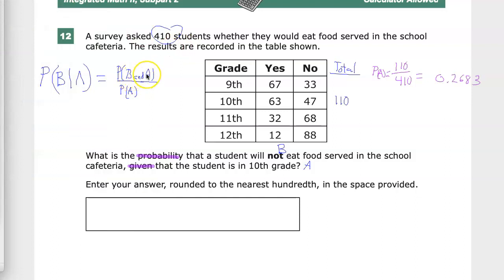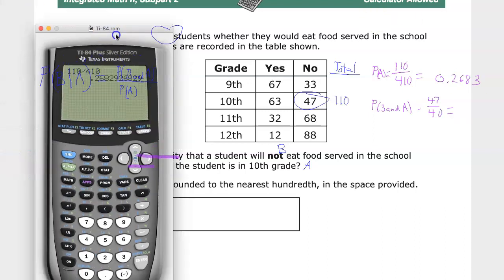Now I need to find what the probability of B and A is, which is to say they're 10th graders and they don't eat food. So 10th grade, no, right there. That's kind of how that works. So I take the 47, and this is probability of B and A. And there's notation for this, but I don't feel like putting it in now. I'll just use 'and'. 47 divided by 410, because it's out of the total number of students, right? This is a very specific subset of the original group.